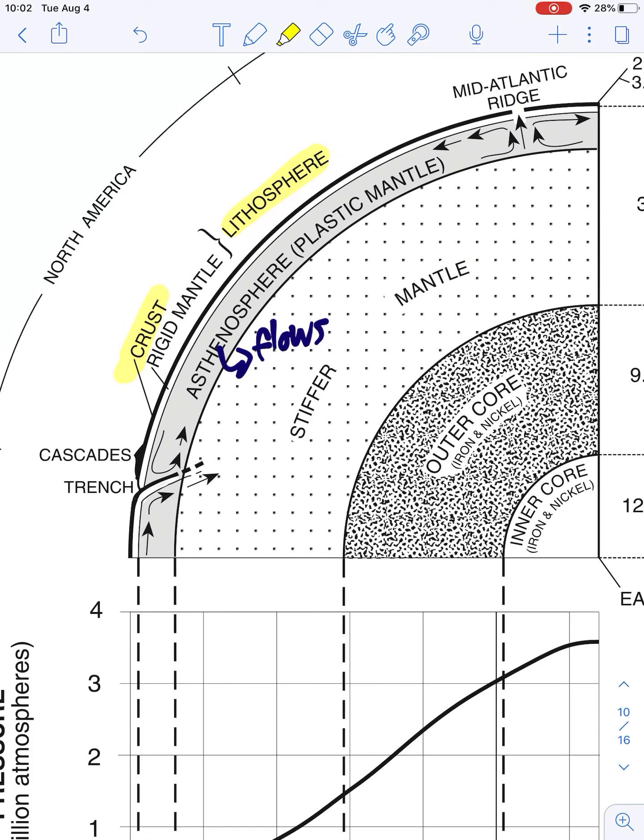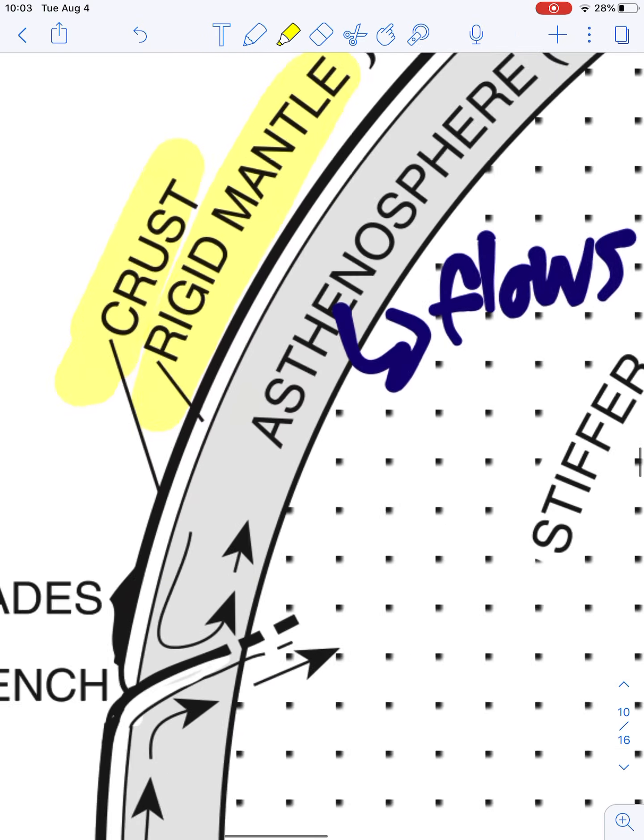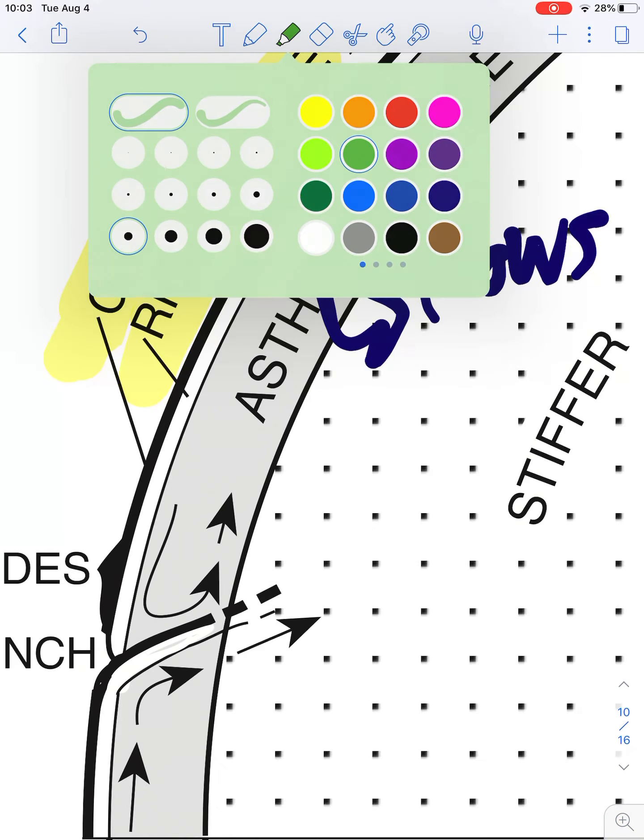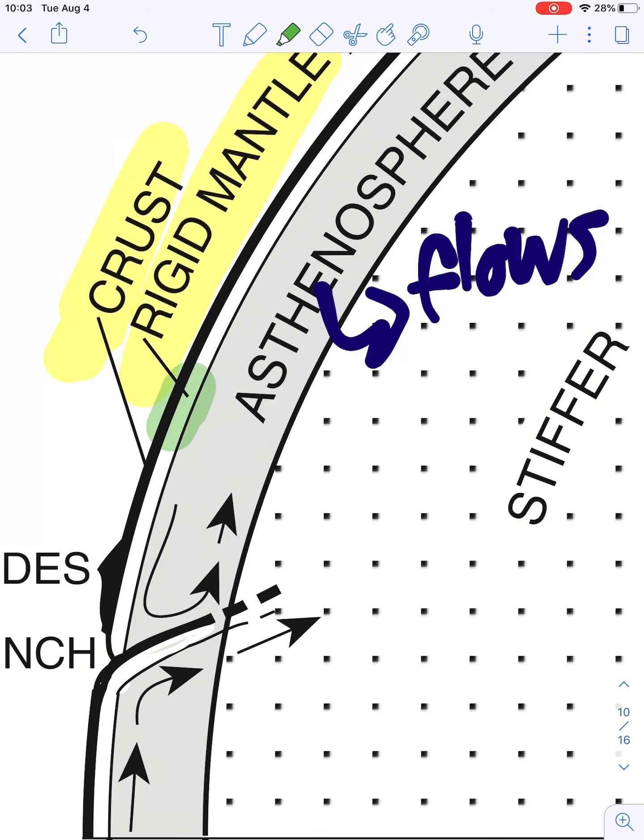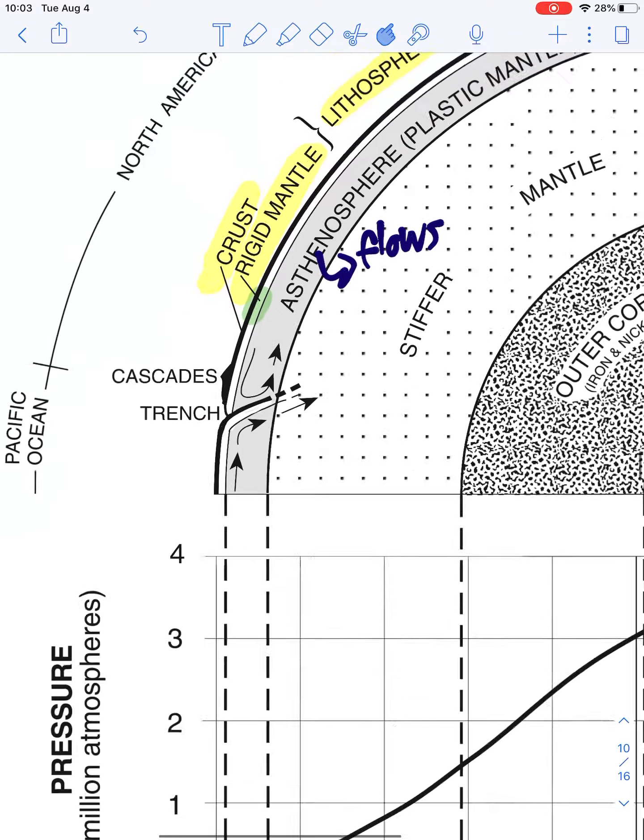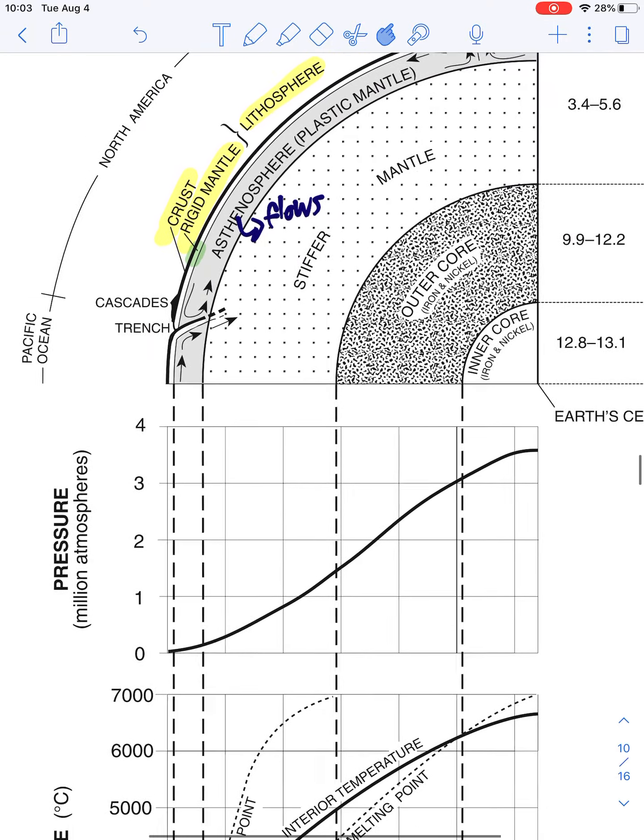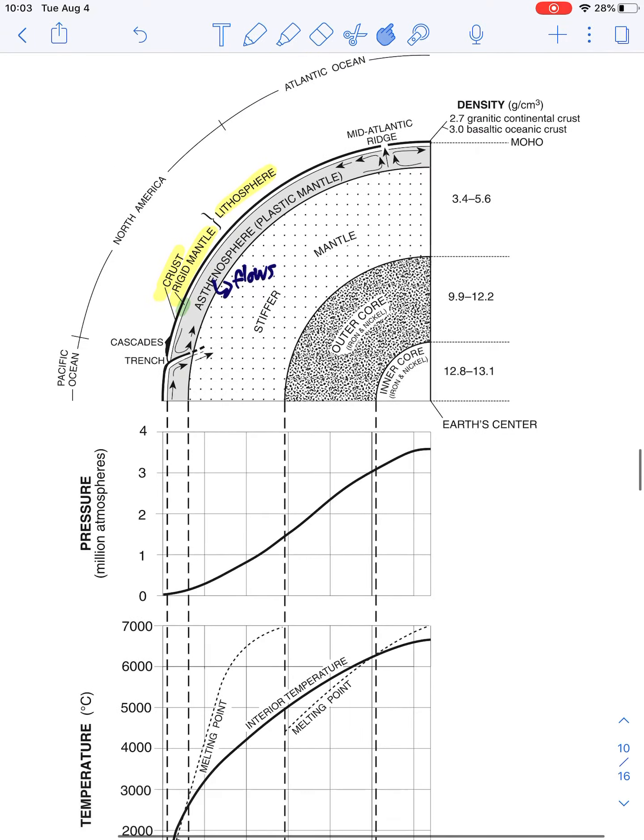So the first layer of the mantle is actually part of what we call the lithosphere. But that white stripe right here, I'm going to zoom in again. You can see it here. I'll change the color of my highlighting, but this white stripe right there, that's the first layer of the mantle and it's solid. It's rigid. So they'll call that the rigid mantle or the upper rigid mantle depending on what you're reading.